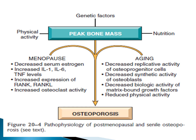Both aging and menopause have a dual effect leading to osteoporosis. Before understanding the mechanism, we need to know about peak bone mass — the maximum bone mass a person can achieve. It depends primarily on genetic factors, then nutritional status, and then physical activity and exercise. The higher the peak bone mass achieved during young years, the more delayed the onset of osteoporosis.